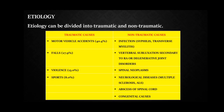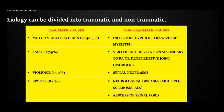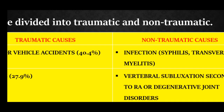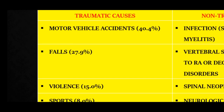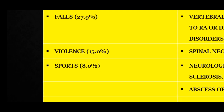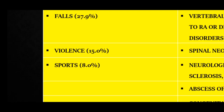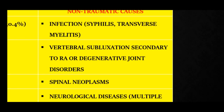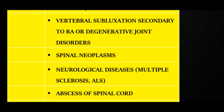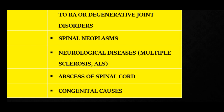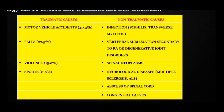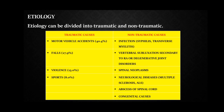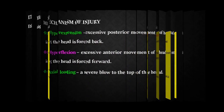The etiology of spinal cord injury can be divided into two categories: traumatic and non-traumatic causes. Traumatic causes include motor vehicle accidents, falls, and sports — especially diving, football, and rugby. Non-traumatic causes include infections like syphilis, transverse myelitis, vertebral subluxation secondary to rheumatoid arthritis or degenerative joint disorders, spinal neoplasms, neurological diseases like multiple sclerosis or amyotrophic lateral sclerosis, spinal abscess, and congenital causes.